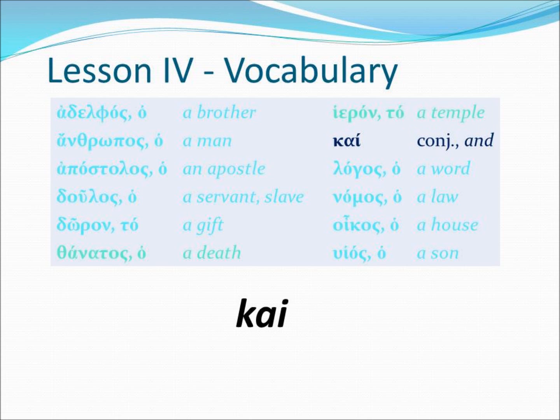Our next vocabulary word is not a noun at all, but instead it's what is called a conjunction. The word is kai, and kai means 'and.' In a sentence I might say adelphos kai anthropos — that would be 'a brother and a man.'